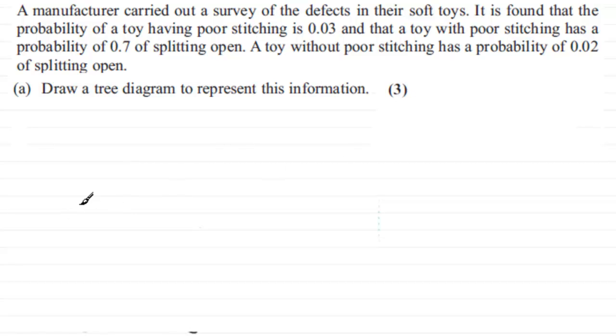Well, first of all, we're going to look at the types of stitching that we can get. There's two things that can happen. The stitching is either good or it's poor. So we just have here good stitching, and down here we'll have poor stitching. Obviously, you can put poor stitching at the top, it doesn't matter, and then good stitching below.